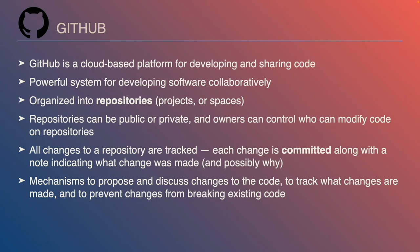All changes to a repository are tracked — this is really important. If you are working on a repository, you do a step called cloning that copies the files from GitHub onto your own computer. At that point you can edit, test, run, and save the files. None of that changes what's on GitHub. Every change you make must be explicitly committed, which means you're saying you want that change to be part of the GitHub repository. That's an explicit step.